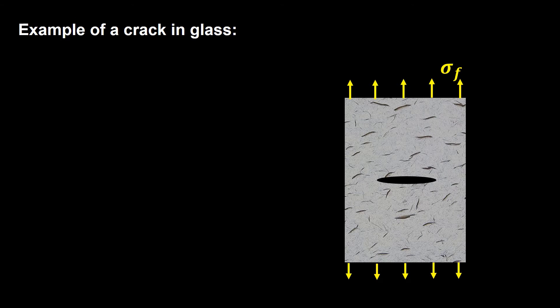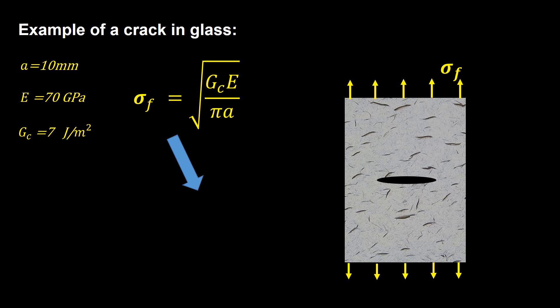We know that glass panes are brittle. Let's investigate failure stress of glass with an initial given crack length of 10 millimeters. Using Griffith equation, the Young modulus of glass is 70 GPa, and the critical energy release rate is about 7 J per square meter. So failure stress is about 4 MPa. This is a very low failure stress. It can be easily exceeded when bending loads are imposed on a pane of glass, which usually happens in our life.